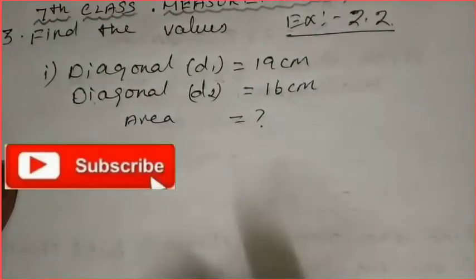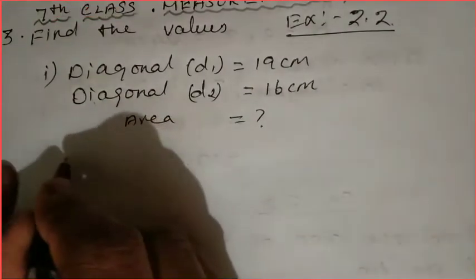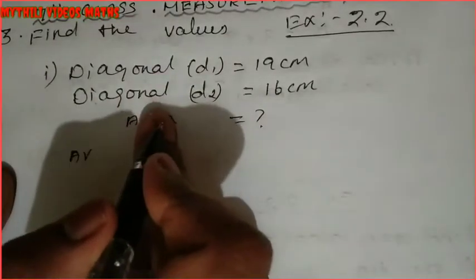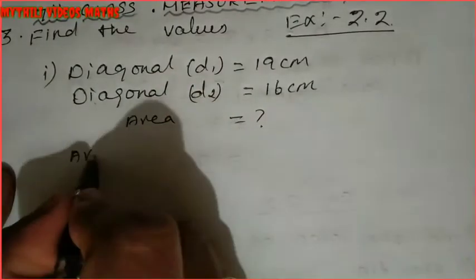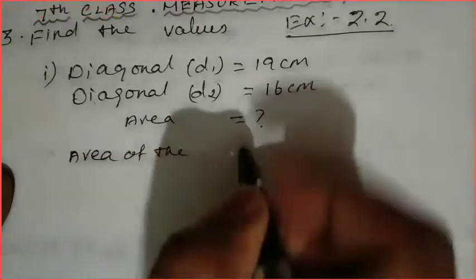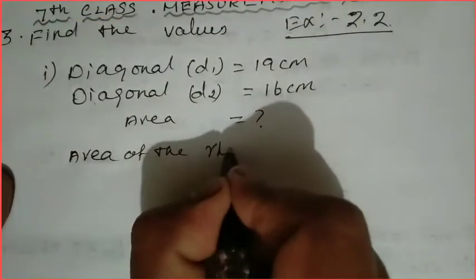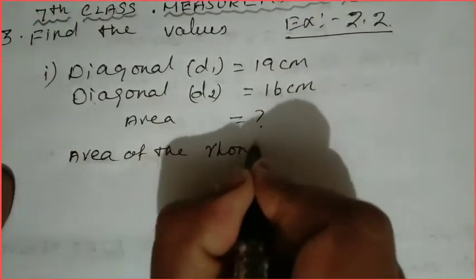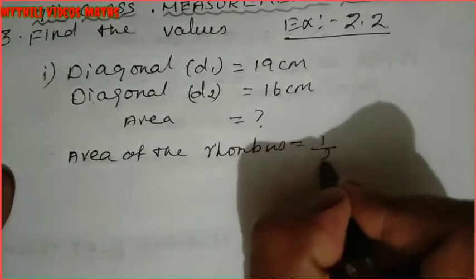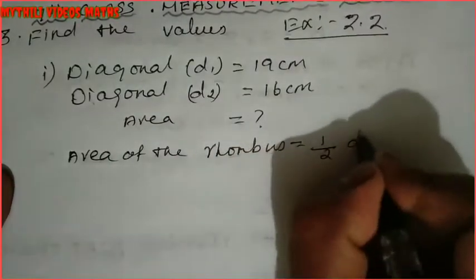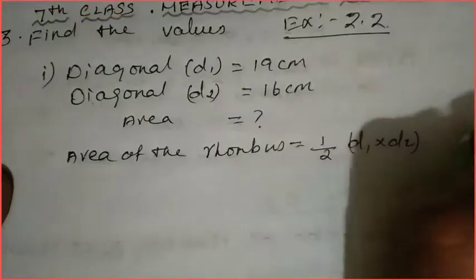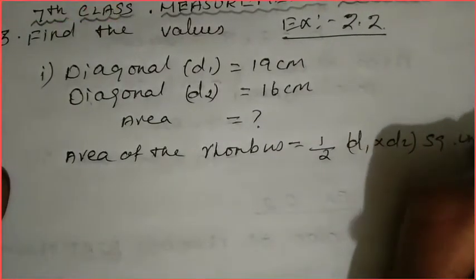Since diagonals are given, we have to use the formula: Area of the rhombus = 1/2 × d1 × d2, in square units.